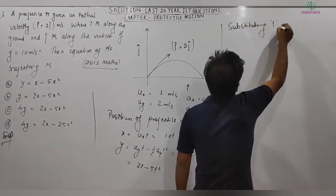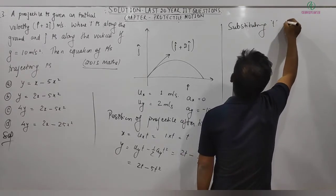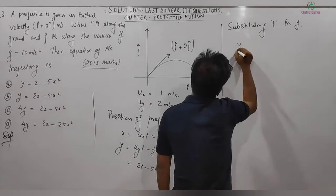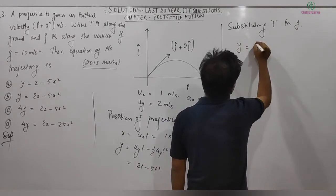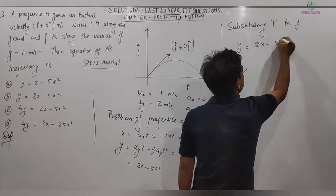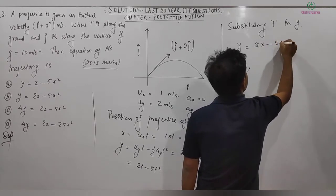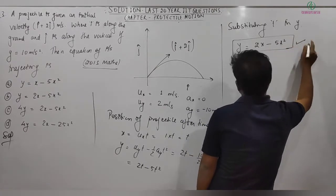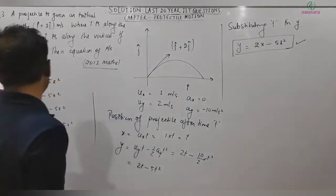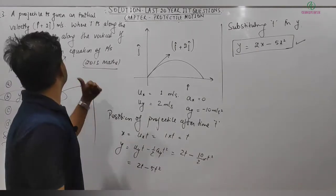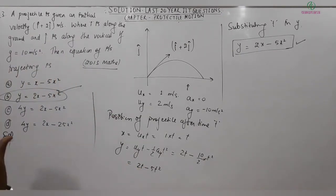Substituting t = x into y = 2t − 5t² gives y = 2x − 5x². This is the equation of trajectory. That's a simple straightforward problem once you know the approach.